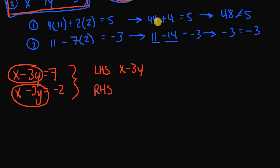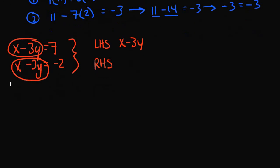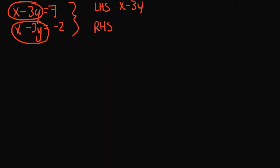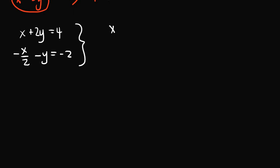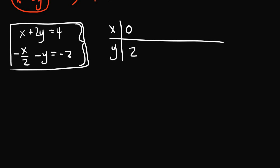There might also be times where a system has multiple or an infinite number of solution sets. For example, the system x plus 2y equals 4 and negative x over 2 minus y equals negative 2 has many solutions. One possible solution set is x equals 0 and y equals 2. Plugging in: 0 plus 2 times 2 equals 4, and negative 0 over 2 minus 2 equals negative 2. Both equations are satisfied.